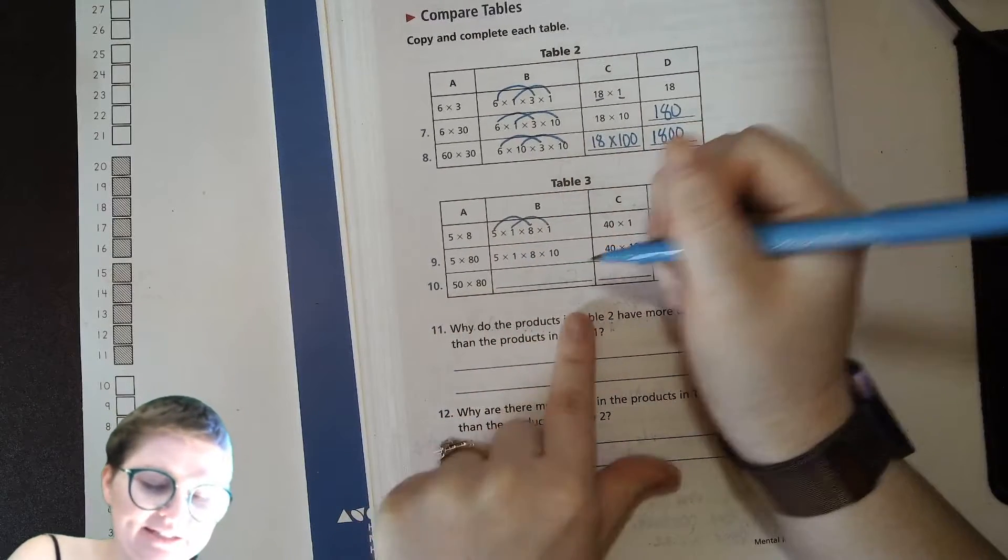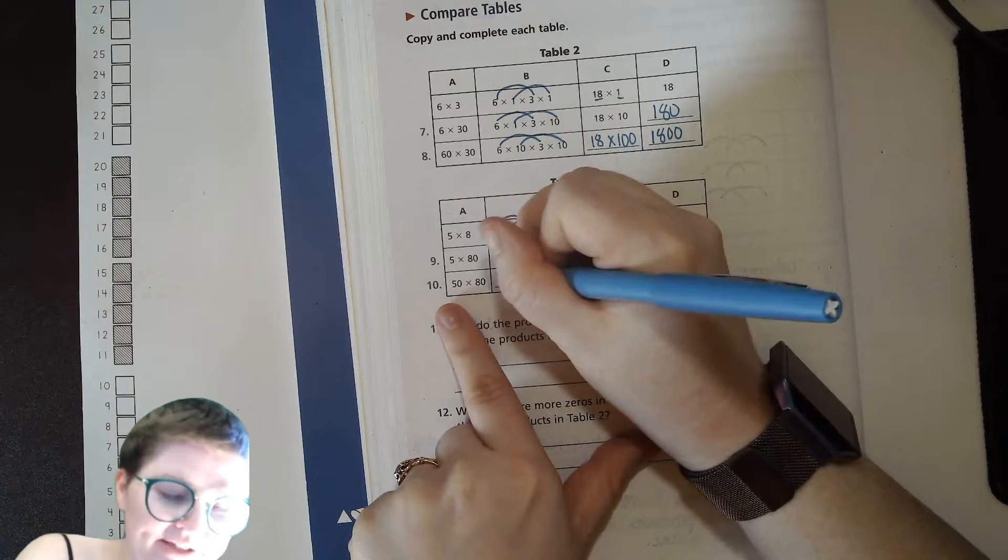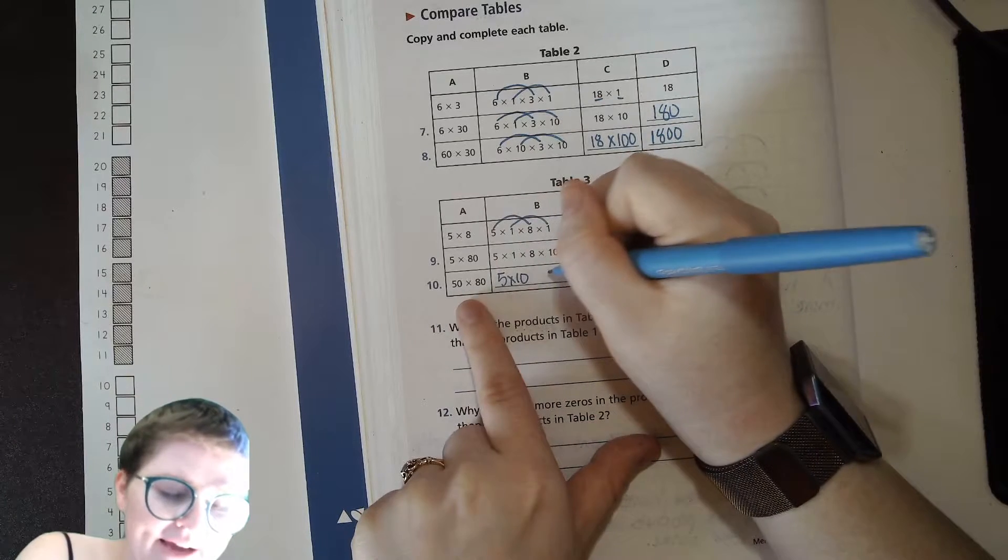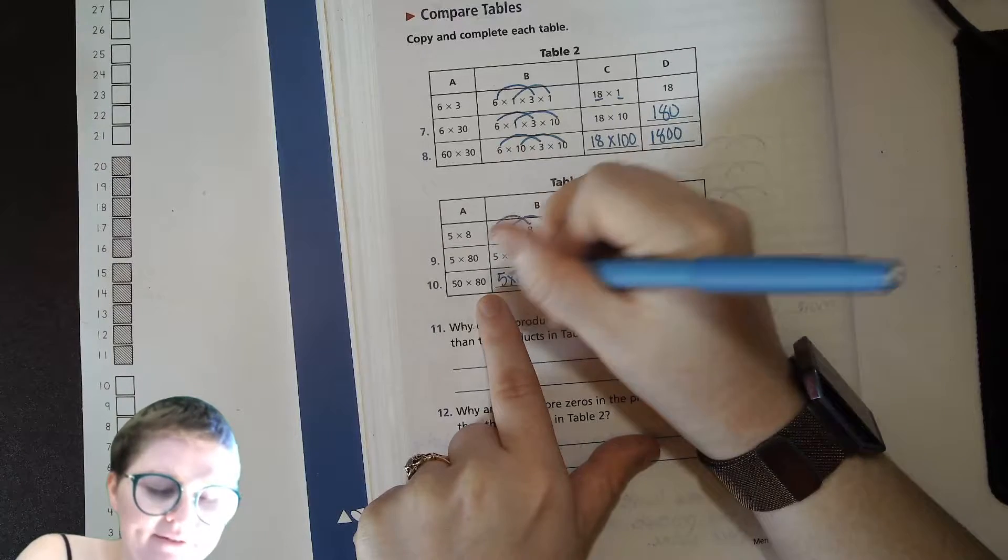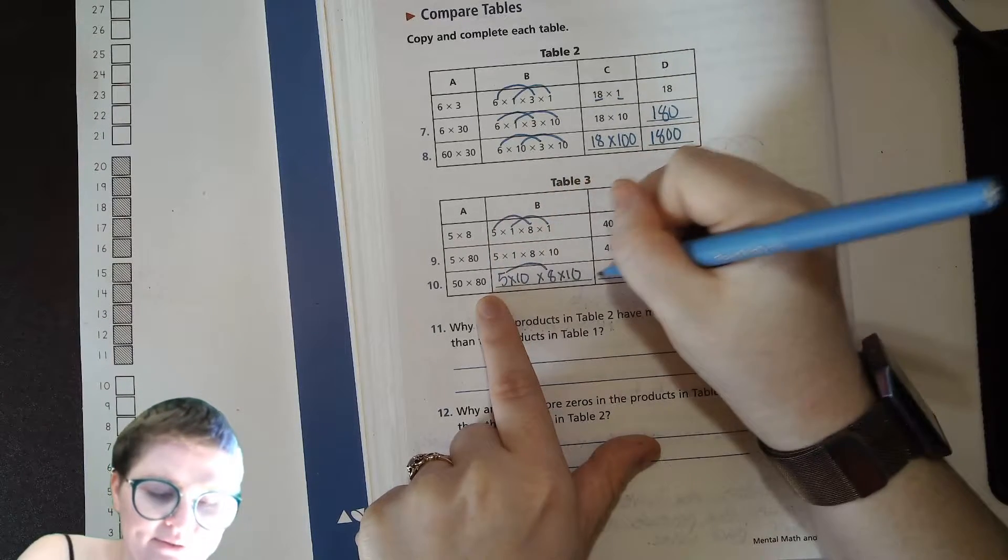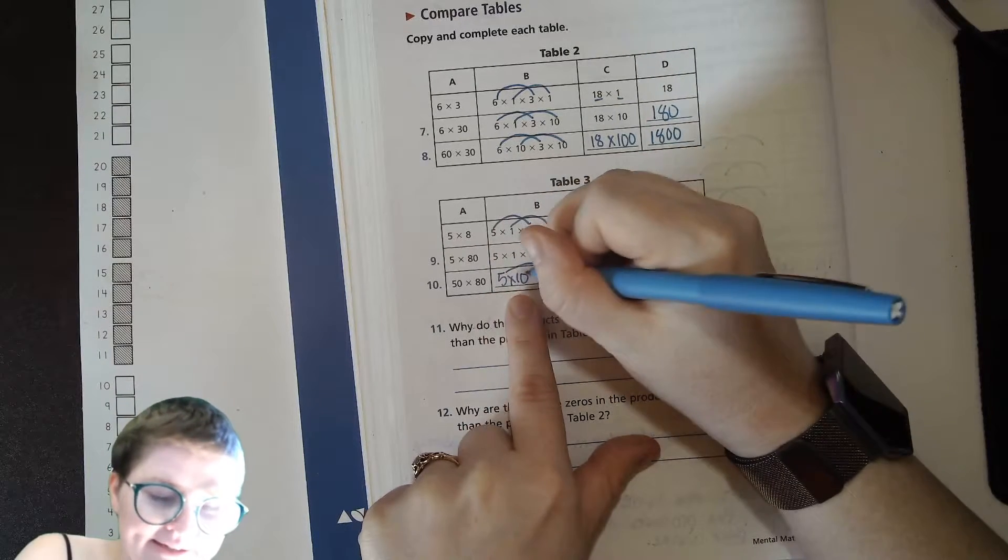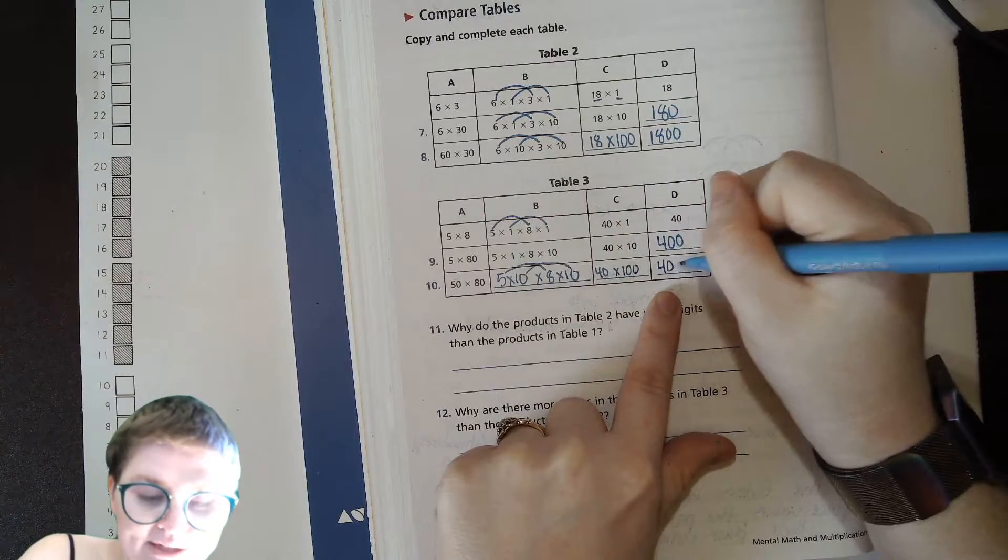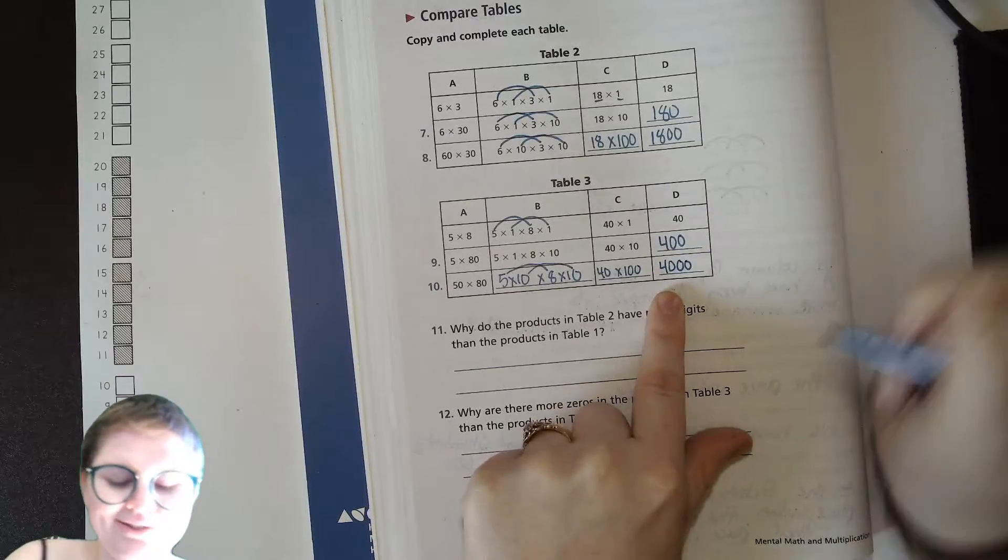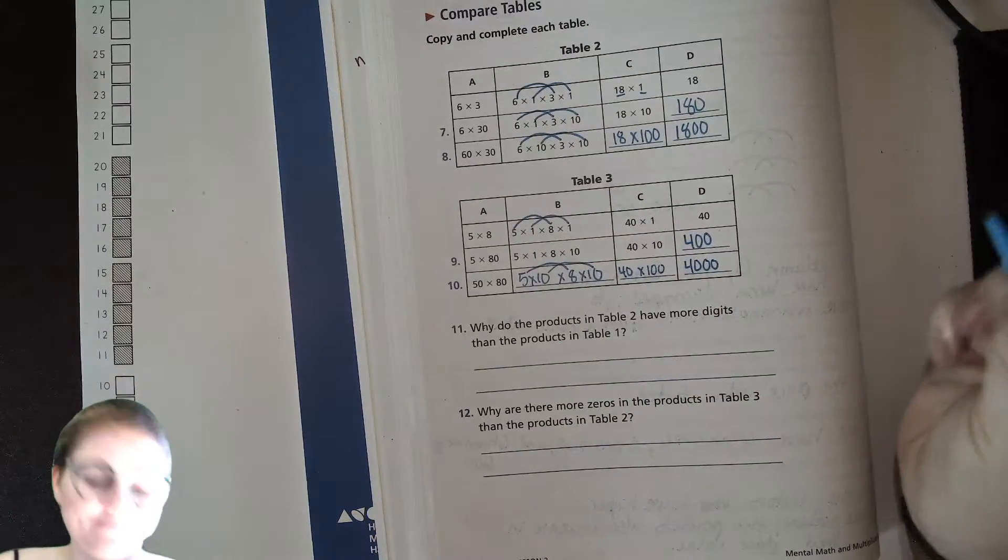Fifty times eighty, so how do you get fifty? Five times ten. How do you get eighty? Eight times ten. Five times eight? Forty. Ten times ten? One hundred. So forty hundred is four thousand.